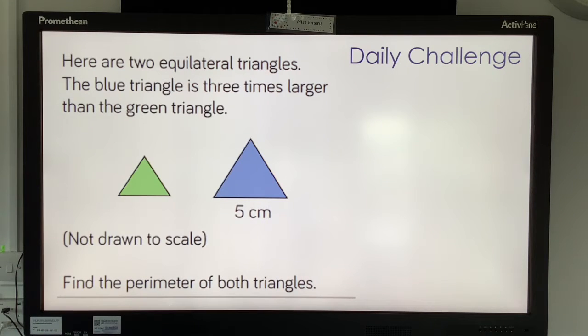And last one. Here are two equilateral triangles. The blue triangle is three times larger than the green triangle. Find the perimeter of both triangles. Let's have a go and I'll go through the answers in a moment.